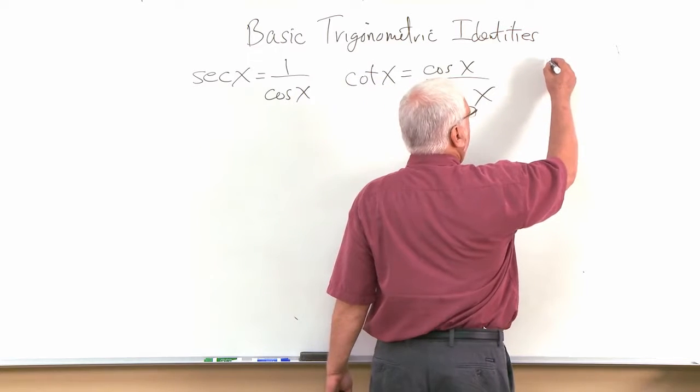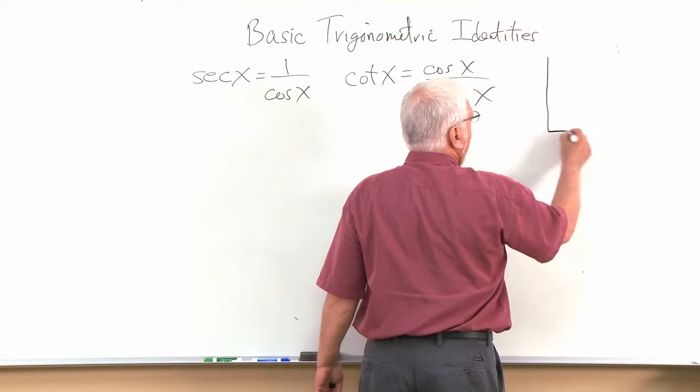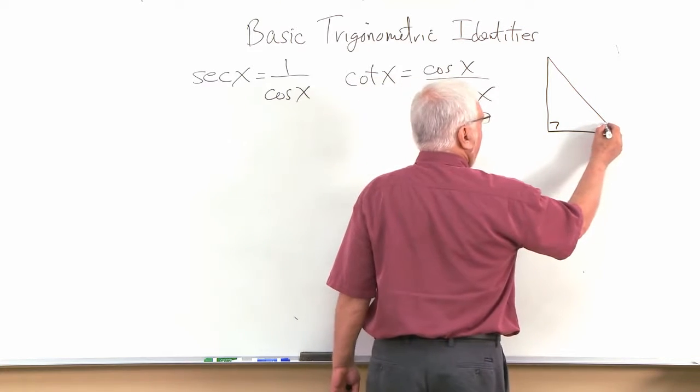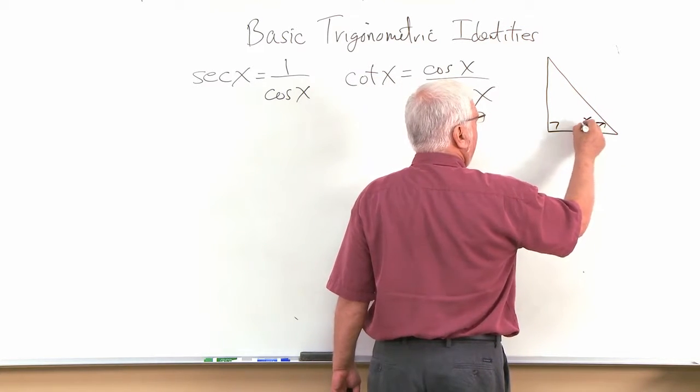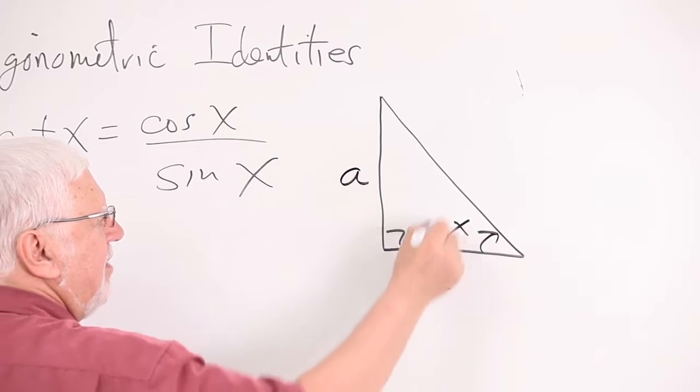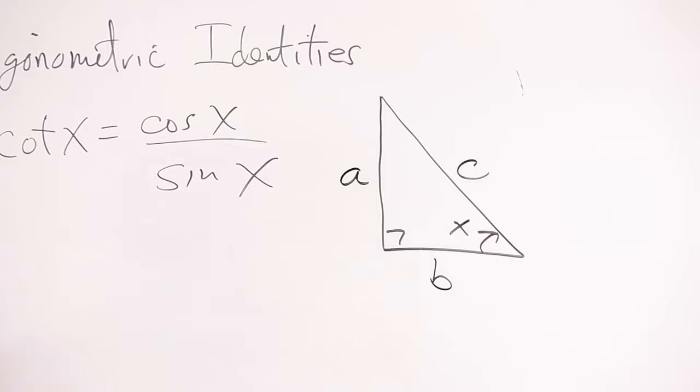But we've got to think over here about having a little right triangle. Because that's how they're all defined. And so if this is our angle x right here, and then we'll put numbers on these other sides. We'll go a, b, c, kind of our traditional.